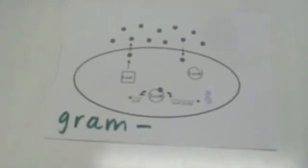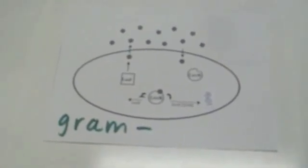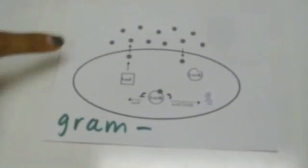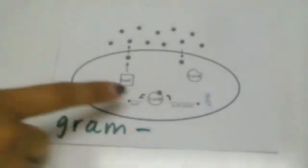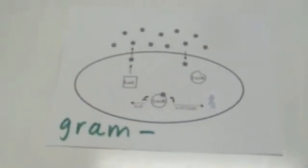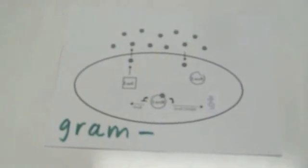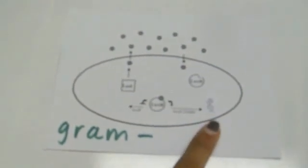Once the critical threshold of auto-inducers is met due to the saturation of the receptors, LUX-R proteins bind to the acyl homocerine lactone molecules. The newly formed LUX-R auto-inducer complex then activates gene transcription.